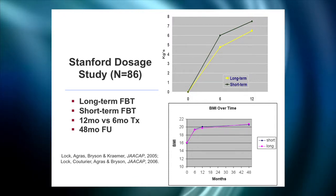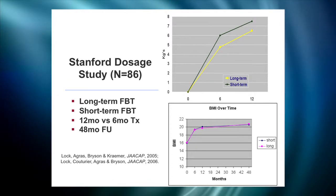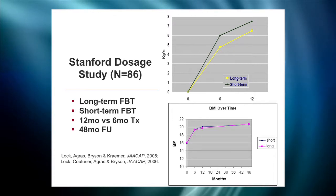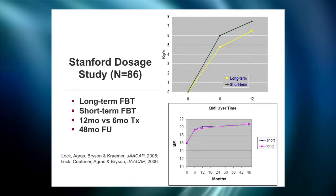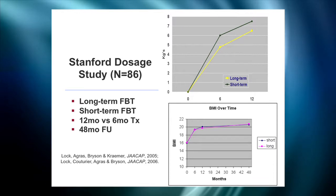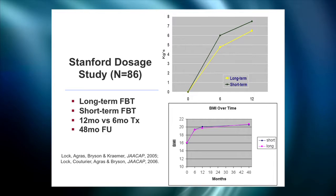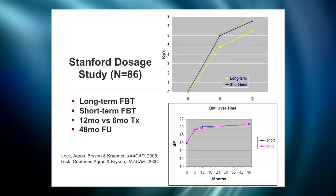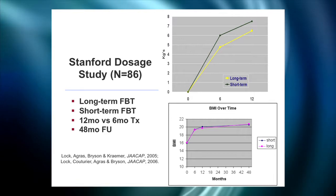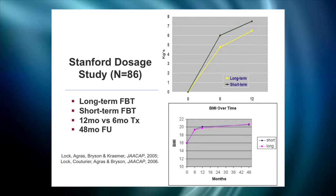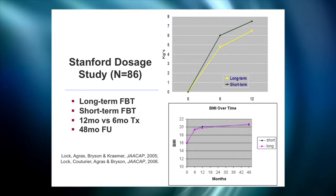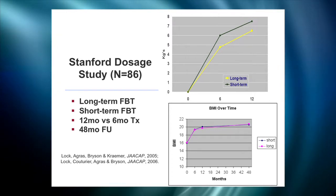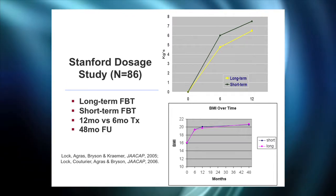The fourth study was done by Jim and his group at Stanford — the first study conducted with the family therapy manual in hand. The idea was to see how much treatment is necessary: there was a short form of 10 sessions over six months and a long form of 20 sessions over 12 months. At the six-month mark there was no difference between the two; about five and a half kilograms on average were gained. The short treatment group ended at that point, while the 12-month group continued and gained on average about six and a half to seven kilograms.